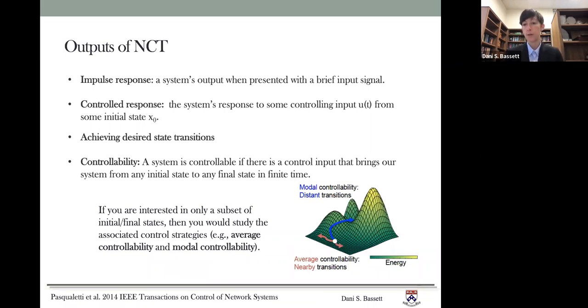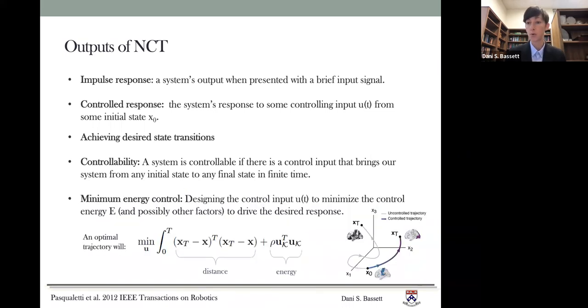The fourth output is the controllability. So what is the controllability? Well, a system is controllable if there is a control input that brings our system from any initial state to any final state in finite time. And if you're interested in only a subset of initial versus final states, then you might study the associated control strategies like the average controllability or the modal controllability.